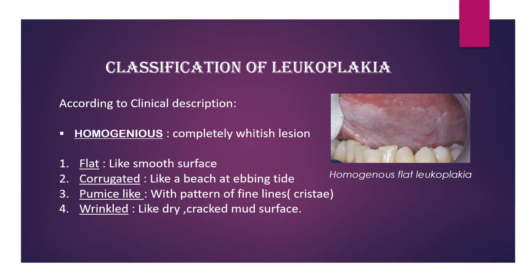Let's learn how leukoplakia is classified. According to clinical description, it is classified as homogeneous leukoplakia and non-homogeneous leukoplakia. Homogeneous leukoplakia is a completely whitish lesion. It is further classified based upon its appearance as: flat leukoplakia, which has a smooth surface; corrugated leukoplakia, which looks like a beach at ebbing tide; pumice-like leukoplakia, which appears as a pattern of fine lines like crystal; and prinker leukoplakia, which appears as a dry cracked mud surface.